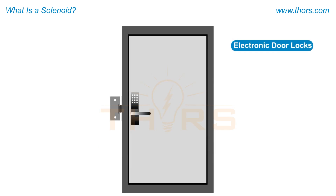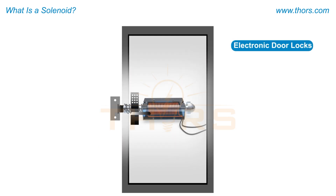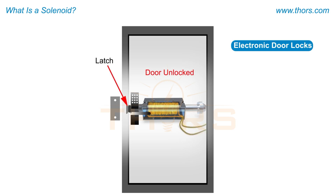In electronic door locks, solenoids are used to lock or unlock doors electronically. When electric current is applied, the metal plunger in the solenoid retracts a bolt or latch, unlocking the door. When the electric current is paused, the spring causes the metal plunger to return to its resting position, locking the door.